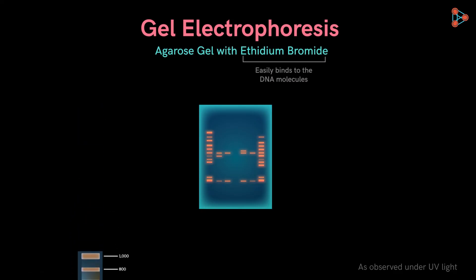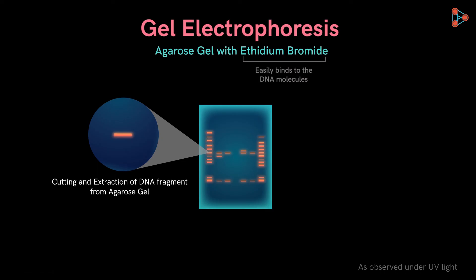Now, the desired DNA fragment can be first manually cut out from the agarose gel and then extracted. This process is called elution. The extraction of the DNA is done in such a way that it can be used for further downstream processing.